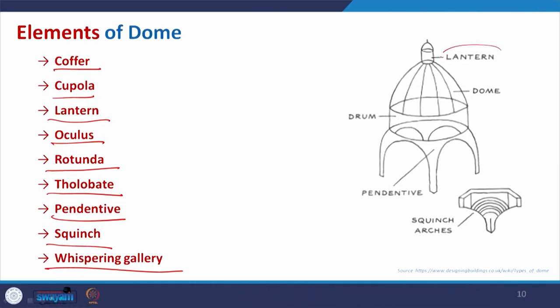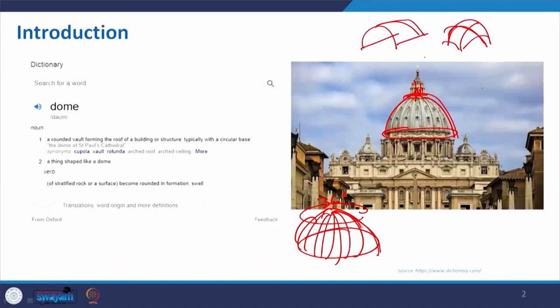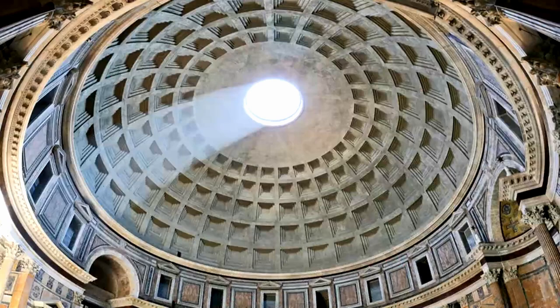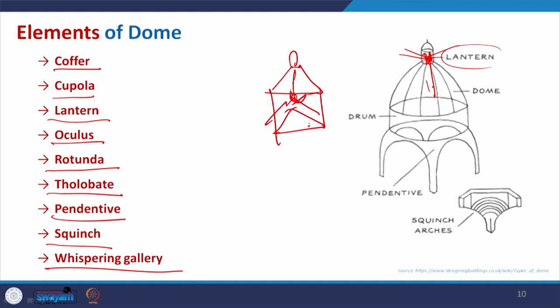The lantern is the upper part — the portion we saw in the initial picture is referred to as the lantern. Not only does it look like a lantern shape, but it has a function: it is used to create a puncture so that light can enter and the interior can receive daylight. Just like holding a lantern with a lamp inside gives light, this works similarly.